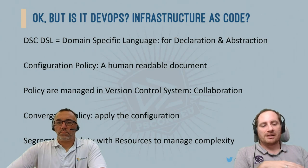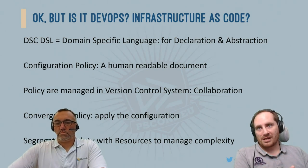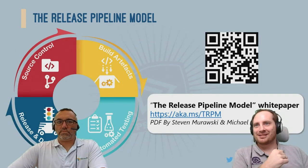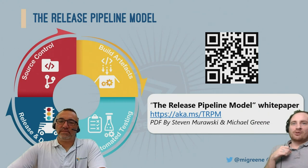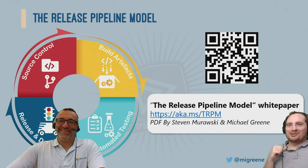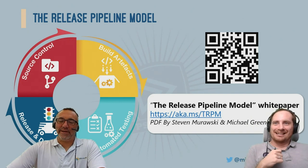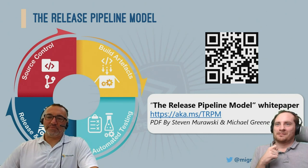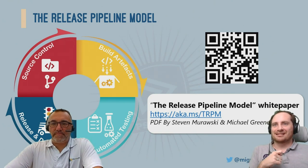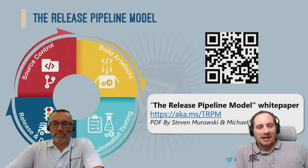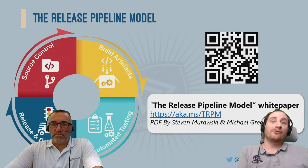Let's be clear: all of those improvements and benefits are not specific to configuration management. Michael and Steve Murawski created the Release Pipeline model white paper, which explains this. It's not new — it was written in 2016. Michael presented it at WinOps London in 2017, and it's on YouTube. It's been written four years ago, which seems like an eternity from an IT perspective. But if you do systems configuration, you will need to go through this to improve your automation maturity. I really recommend you read that white paper.